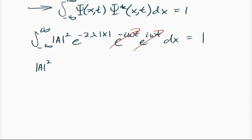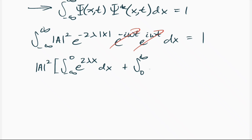The normalization constant A is a constant, so it can go out front as A². To handle the absolute value of x, we split the integral: from negative infinity to zero, all x values are negative, so negative x times negative 2 is positive, giving e to the 2λx dx. Then we add the integral from 0 to infinity.